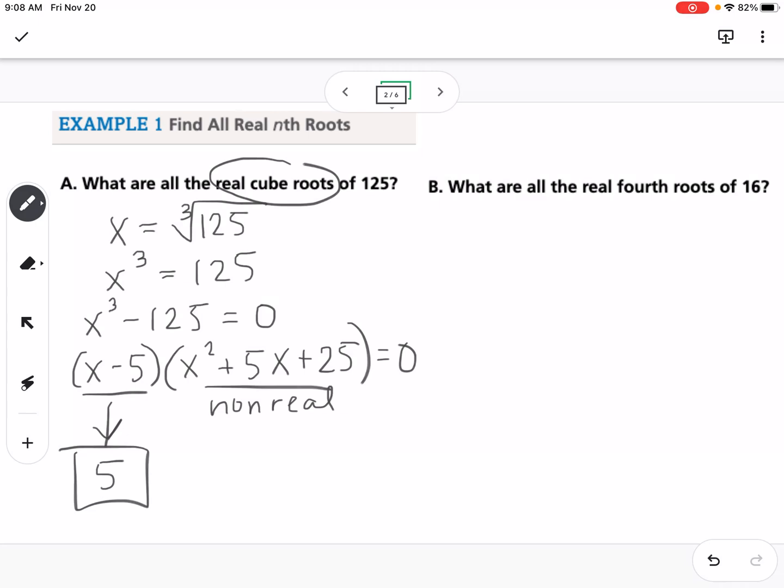So we're going to do the same thing over here. What are all the real fourth roots? So we can say x equals the fourth root of 16. We can raise both sides to the fourth power. And then we can get it all onto one side. And then this is a difference of two squares. So this would be x squared minus 4 and x squared plus 4.